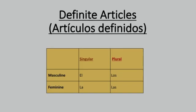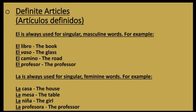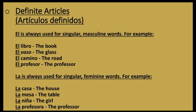Let's see some examples. El is always used for singular masculine words. For example: El libro — the book. El vaso — the glass. El camino — the road. El profesor — the professor.